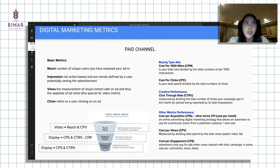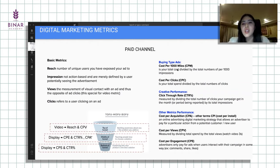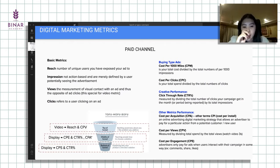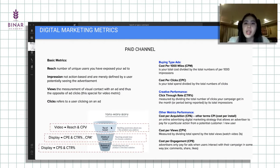Kalau reach, kita pengen tahu berapa banyak unik orang yang melihat iklan tersebut, unik usernya. Secara optimisasi, ada buying type ads itu sebenarnya ada dua yang di pojok kanan, ada CPM, ada CPC. Bedanya CPM sama CPC itu apa? Kalau CPM, biasanya dari total cost dibagi seribu impressions. Sementara kalau CPC atau cost per click, berarti total cost dibagi total clicks. Kapan kita pakai CPM, kapan kita pakai CPC? Kalau dilihat balik lagi ke funnel marketing, biasanya strategi untuk funnel awareness kita fokus ke reach, berarti yang kita pakai CPM buying type-nya.